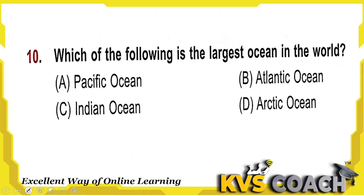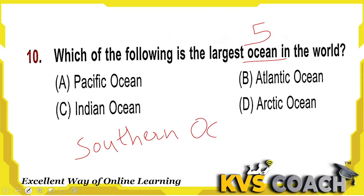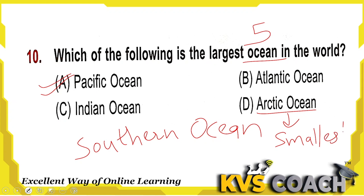Next question: which is the largest ocean in the world? There are five oceans — Pacific Ocean, Atlantic Ocean, Indian Ocean, Arctic Ocean, and Southern Ocean. The largest ocean is the Pacific Ocean, so option A is the right answer. The Arctic Ocean is the smallest ocean in the world.